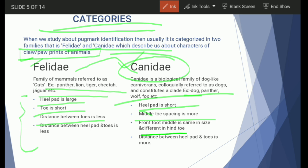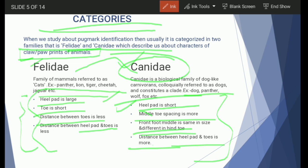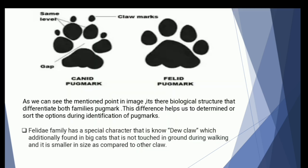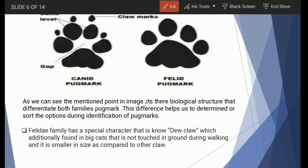In Canidae, the distance between the heel pad and toe is less, whereas in Felidae it is more. Gapping between toes is more in Canidae and much less in Felidae. One important distinguishing feature is the dewclaw, which is mostly present in members of the Felidae family — that is, in the case of big cats.